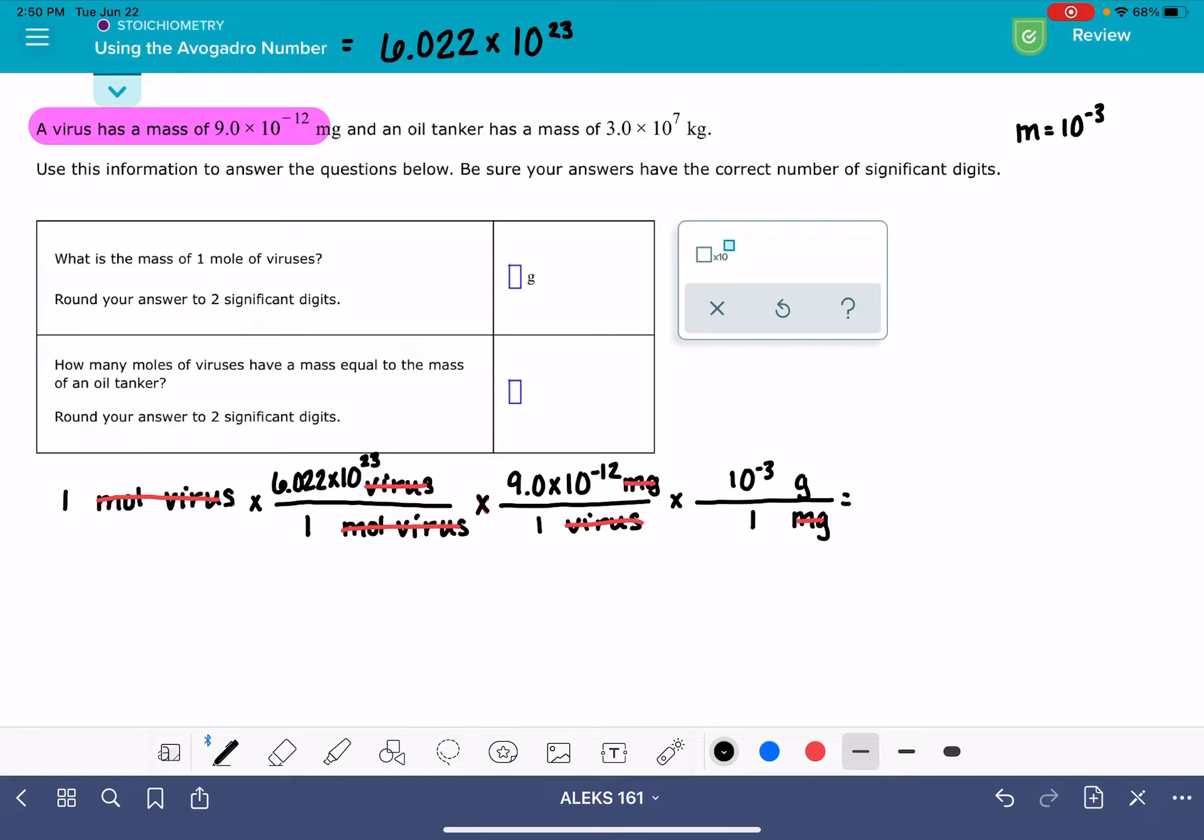So let's do the math on this. We're going to go 1 times 6.022 times 10 to the 23rd. We're going to multiply that by 9 times 10 to the negative 12. And then we're also going to multiply that by 10 to the negative 3. And I get, from my calculator, I get 5, 4, 1, 9, 8, 0, 0, 0, 0, 0, 0.